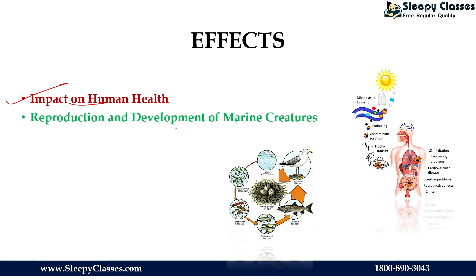Secondly, there is impact on the reproduction and development of marine creatures. Toxic chemicals cause adverse effects on reproduction and development. When toxic chemicals are released, birds' eggshells become very thin and fragile — even at incubation time, eggs get crushed. The chemicals also harm the reproductive organs of aquatic animals, creating very adverse impacts on reproductive and developmental cycles.